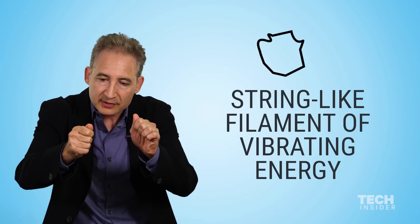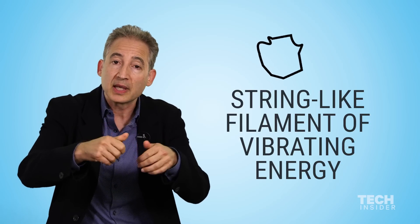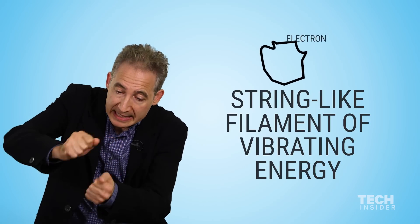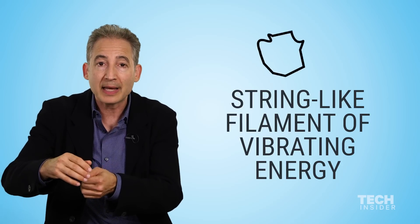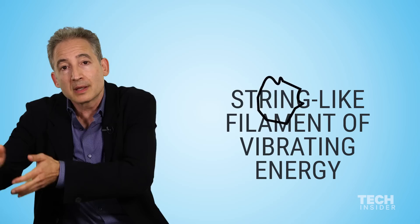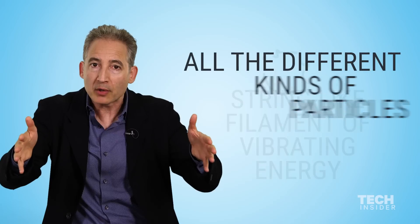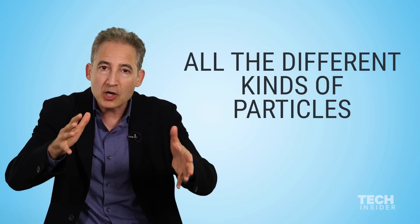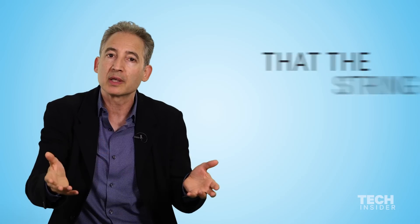Like a string on a violin, this little tiny string can vibrate. And one vibration will, say, be an electron. A different kind of vibration, a different note, to use the musical analogy, would be a quark or a neutrino. So in that way, all the different kinds of particles arise from the different notes that this hypothetical entity called the string can play.